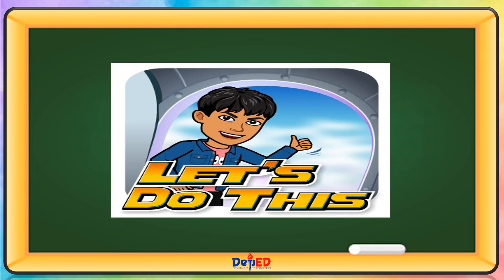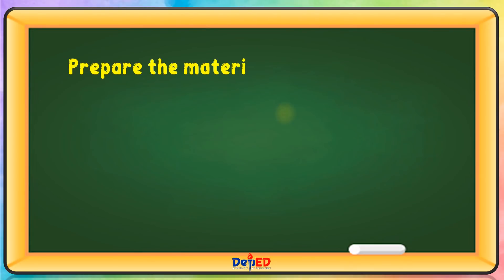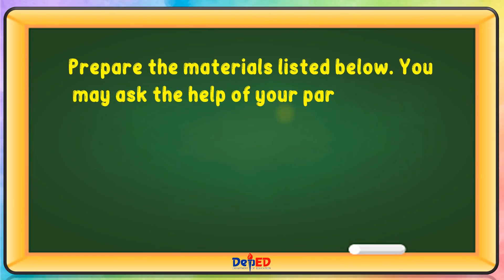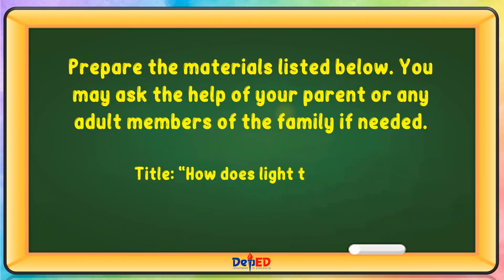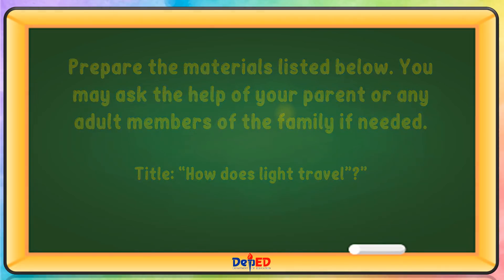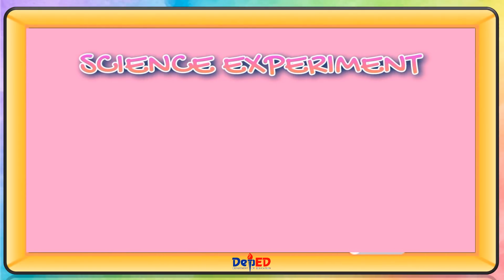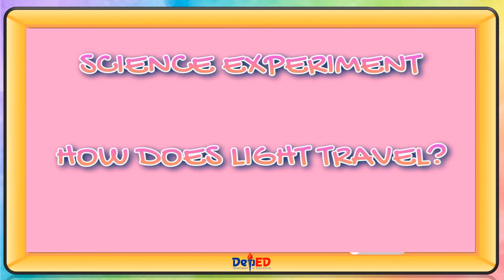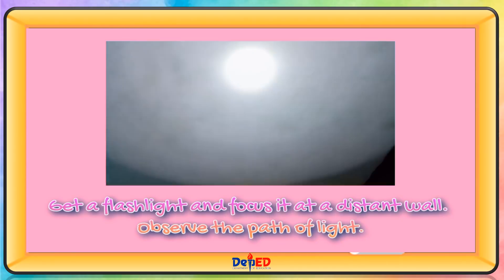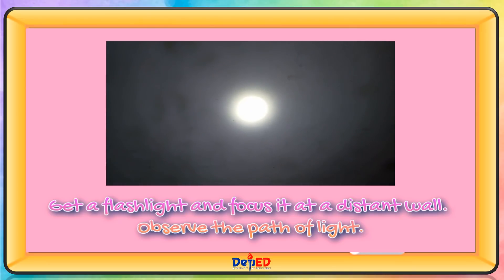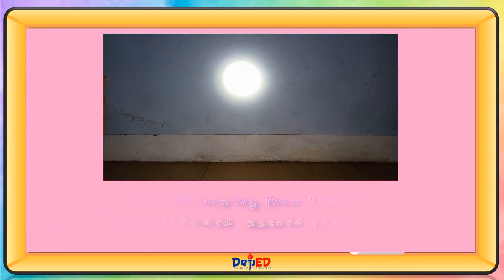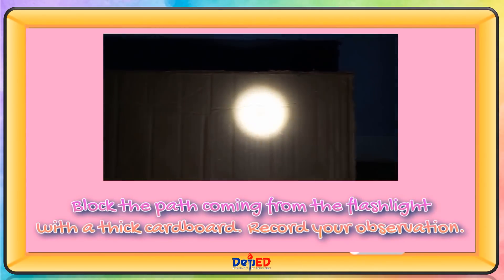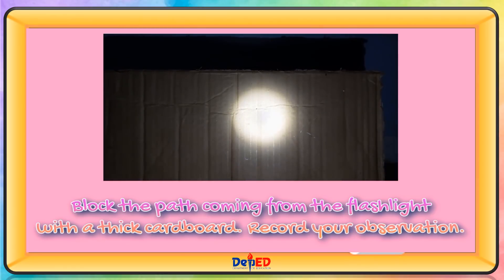Let's do this. Prepare the materials listed. You may ask the help of your parent or any adult member of the family if needed. The title of the experiment is: How does light travel? Get a flashlight and focus it at a distant wall. Observe the path of light. Then plug the path coming from the flashlight with a thick cardboard, and record your observation.